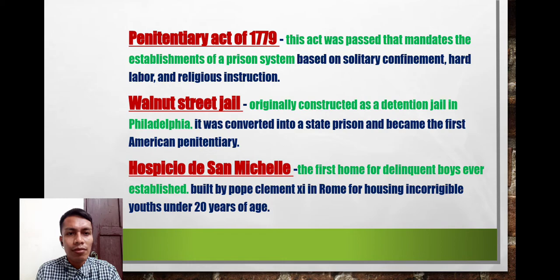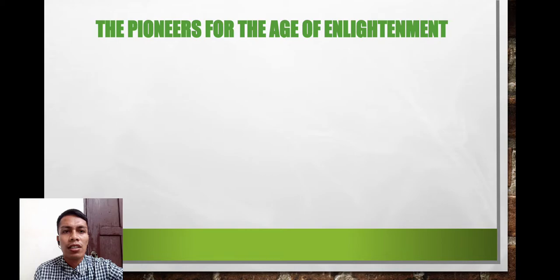The Hospicio di San Michele was the first home for delinquent boys. It housed youth violators under 20 years of age. It was built by Pope Clement the Sixth in Rome for housing incorrigible youths.